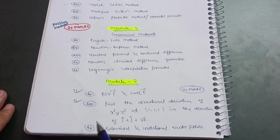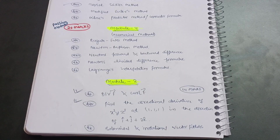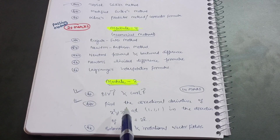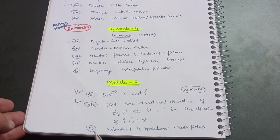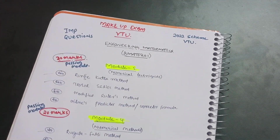The directional derivative is also a simpler one. I have taken only one chapter from Module 2. There are two chapters in this module, so focus on the first one with the topics I've mentioned. Also try some problems on solenoidal and irrotational vector fields. That covers Module 2, Module 4, and Module 5.